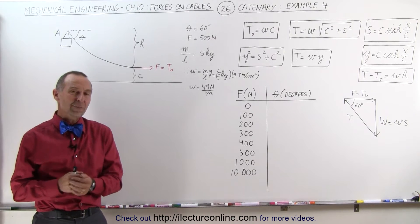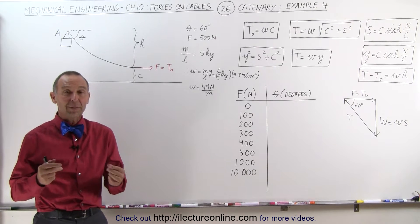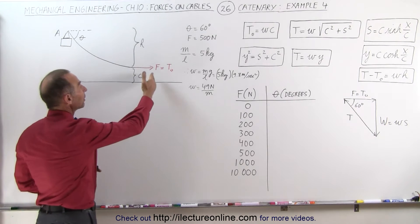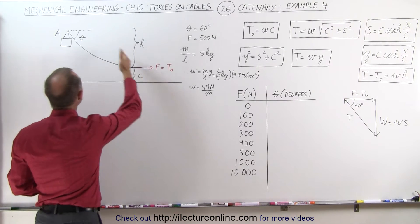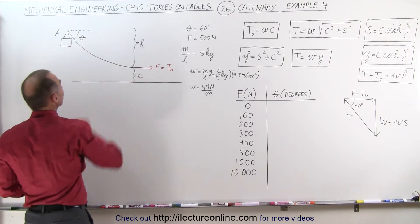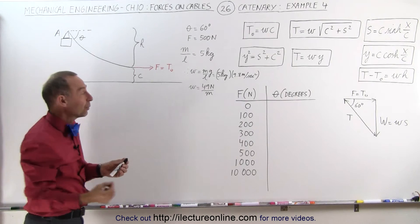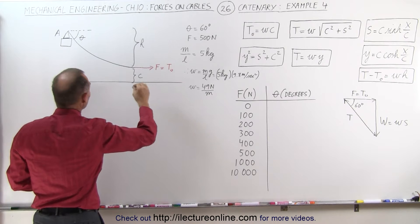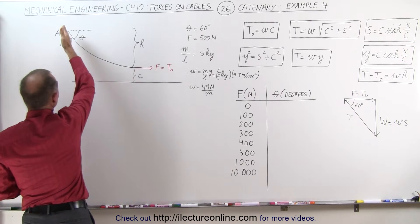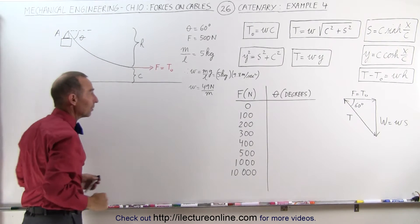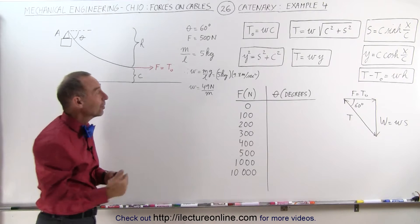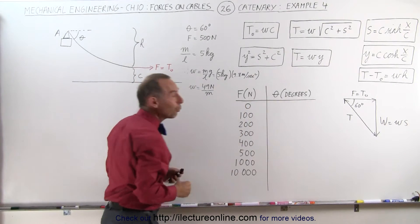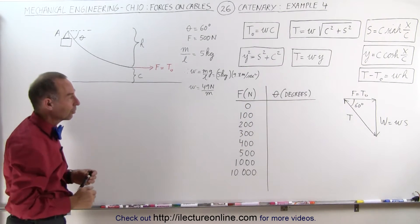Welcome to Electron Line. Here we have the same problem we had in the previous video, with the difference that we're going to vary the force and then see how the angle changes. We're going to start with a force of 0 N. So we pull on the cable with a force of 0 N — we expect the cable to hang straight down. But how do we prove that, and how does that angle change as we increase the force on the cable in the horizontal direction?